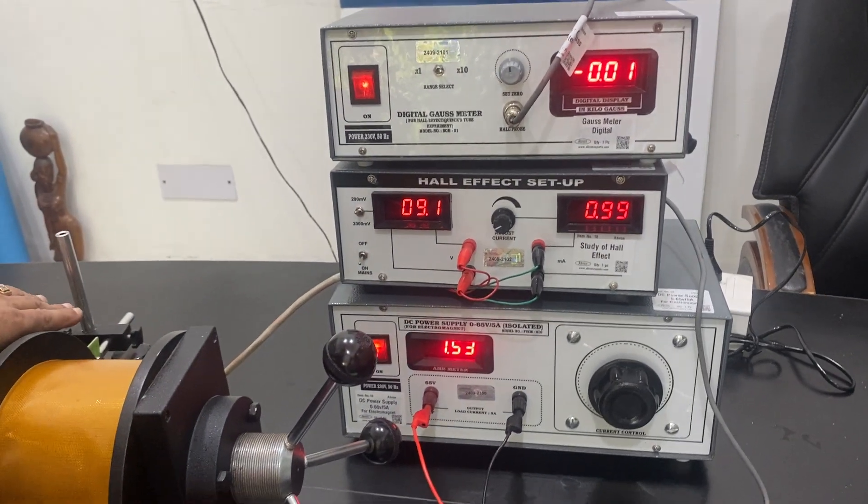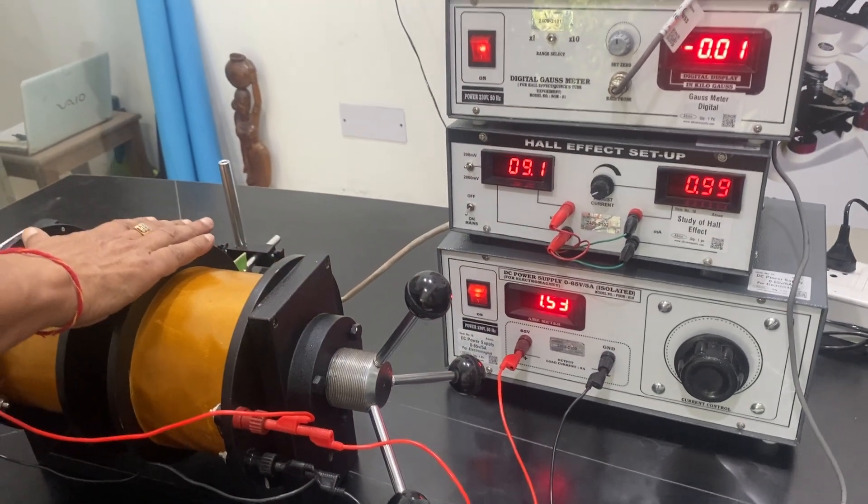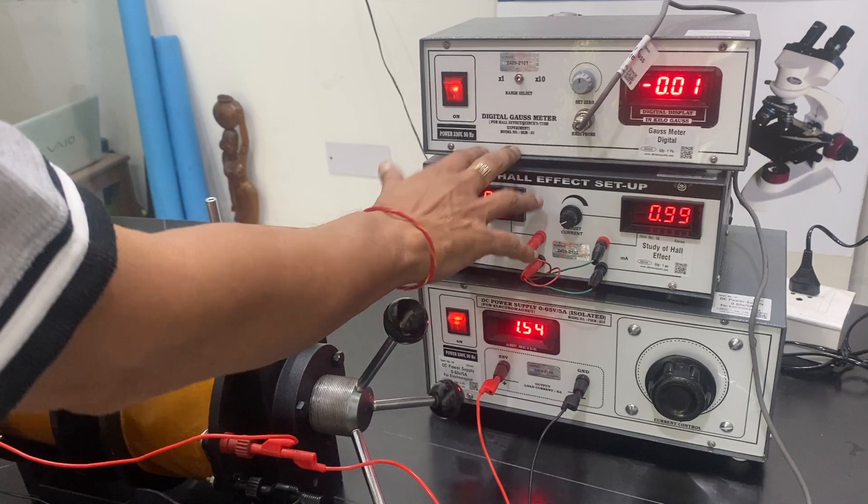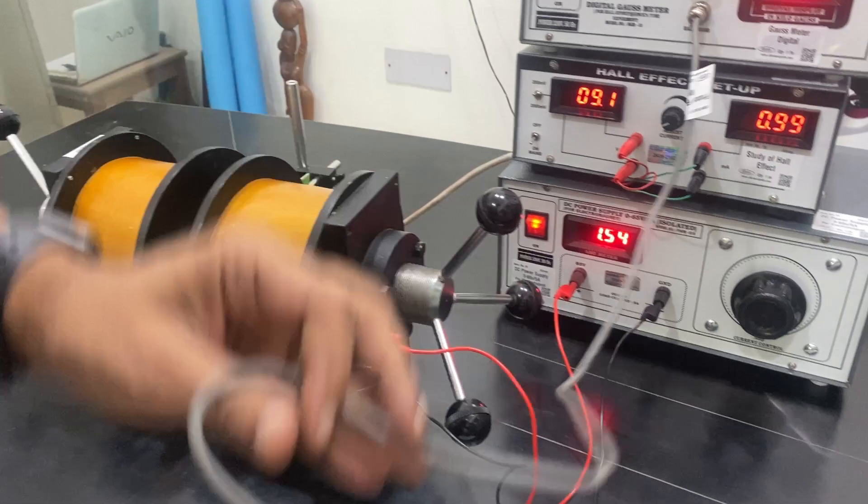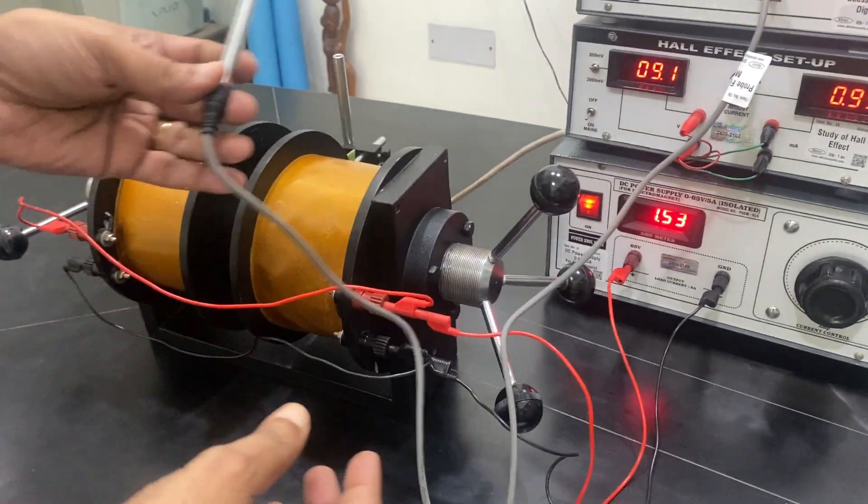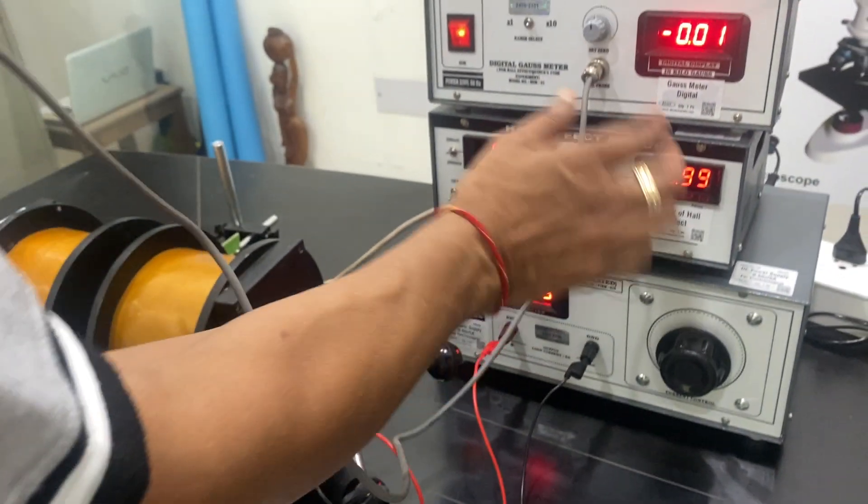This will change the voltage and see the output of the current or the crystal. And there is a gauss meter, digital gauss meter also. It is optional. And then there is a probe here. Hall probe is there. You can connect the probe.